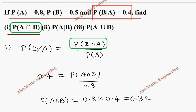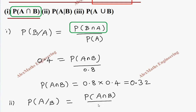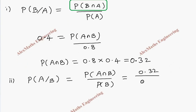In the second subdivision, they ask for P of A given B. We write the formula: P of A given B equals P of A intersection B divided by P of B. The value of P of A intersection B is 0.32, and P of B from the question is 0.5. After division, we get 0.64.